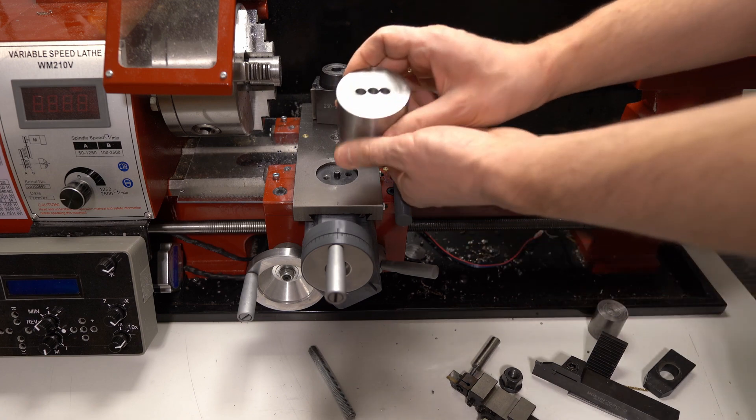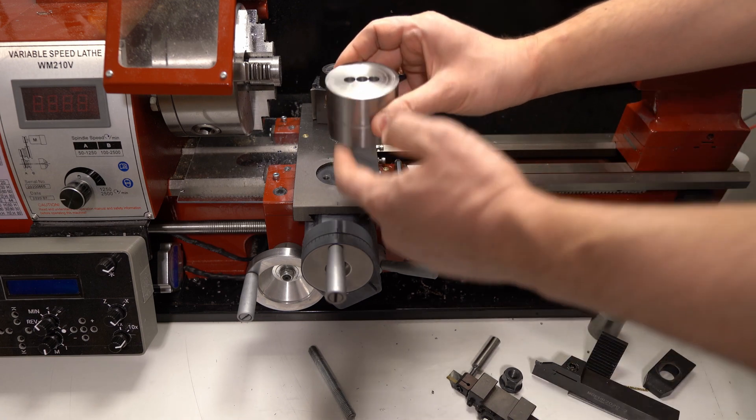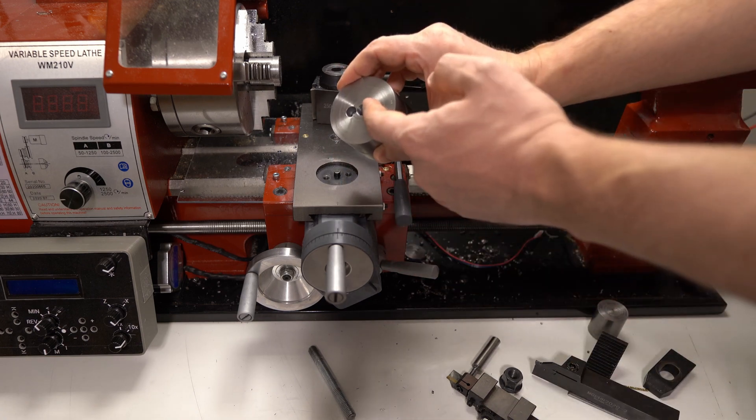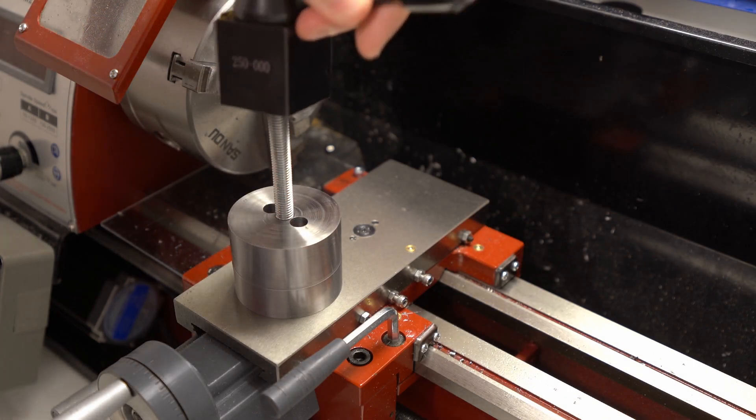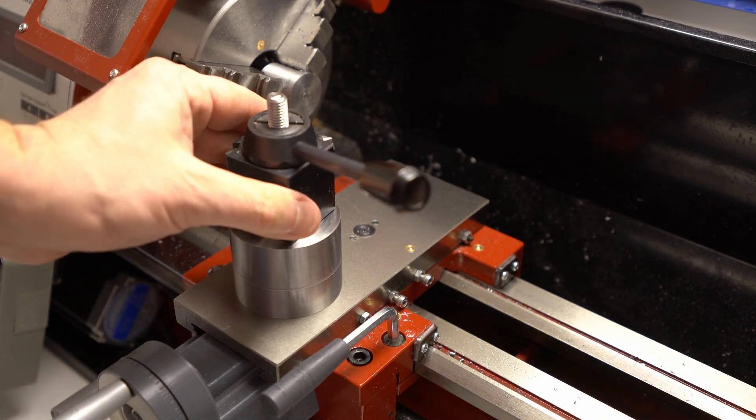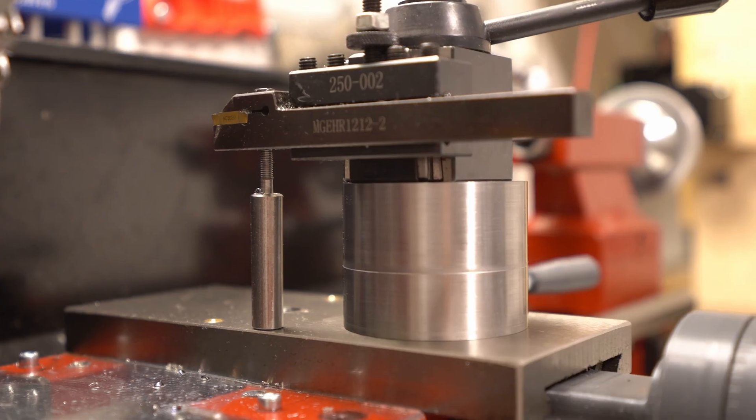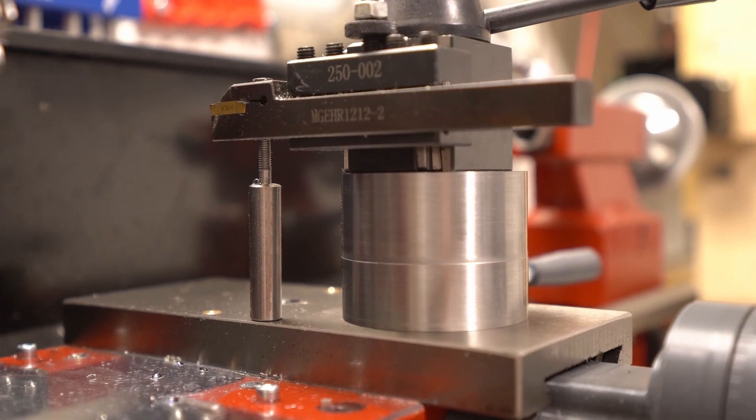This is an incredibly simple part, it's just two holes going down, one threaded hole going up. So now I can just use my standard quick change tool post. This little leg makes all the difference in the world when cutting off.